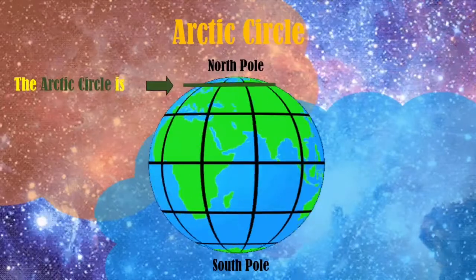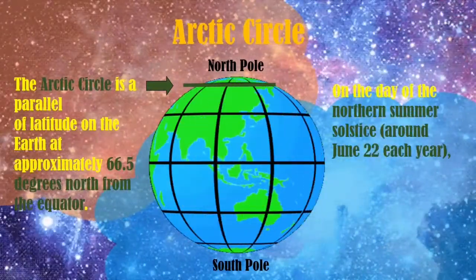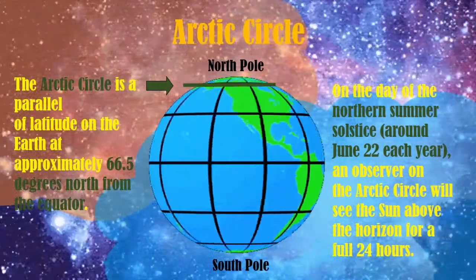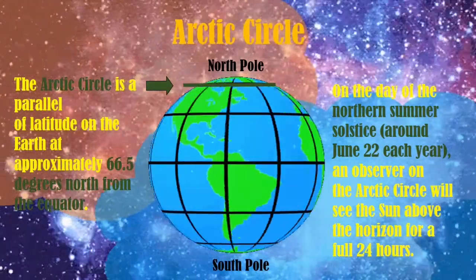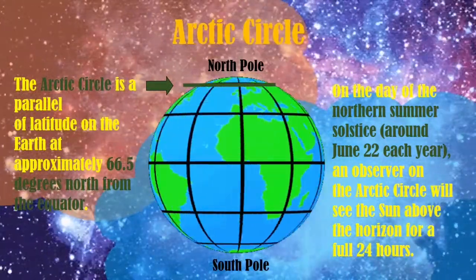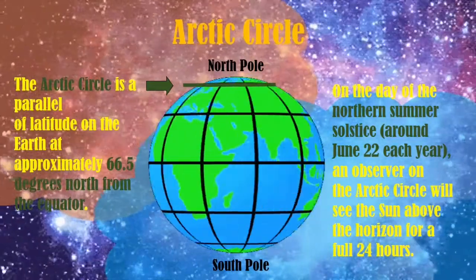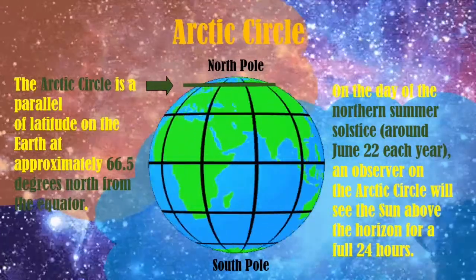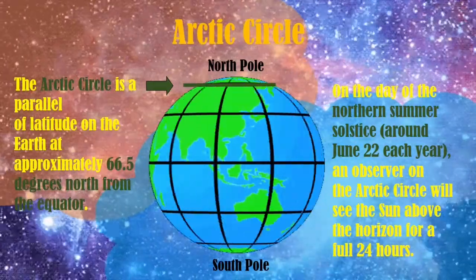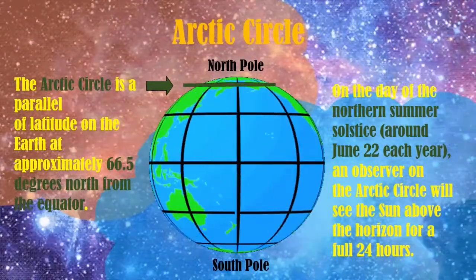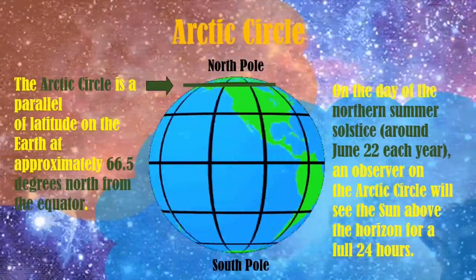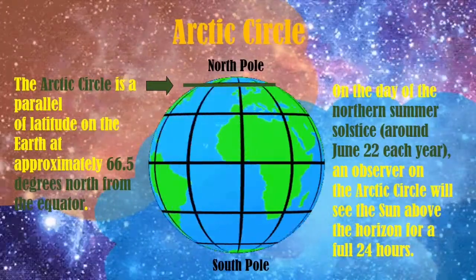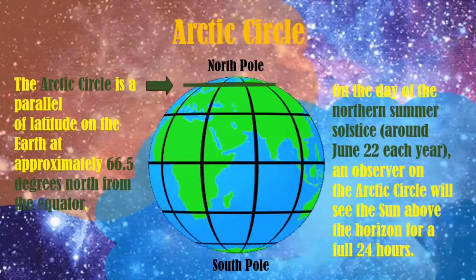Next, we have the Arctic Circle. This is actually a parallel of latitude on the earth at approximately 66.5 degrees north from the equator, as shown on the slide. On the day of the northern summer solstice, around June 22nd each year, on the Arctic Circle you can see the sun above the horizon for a full 24 hours.